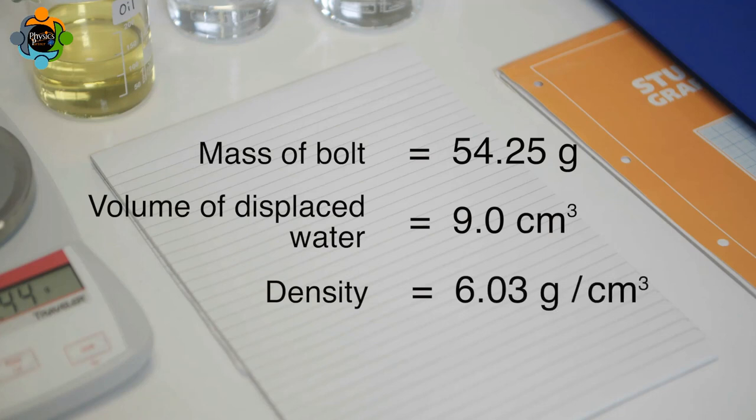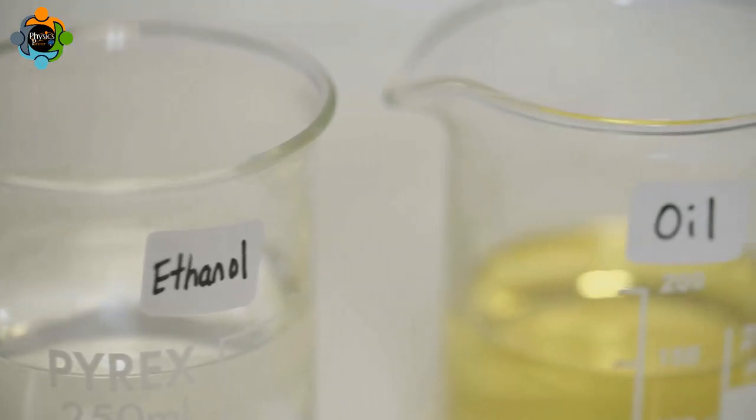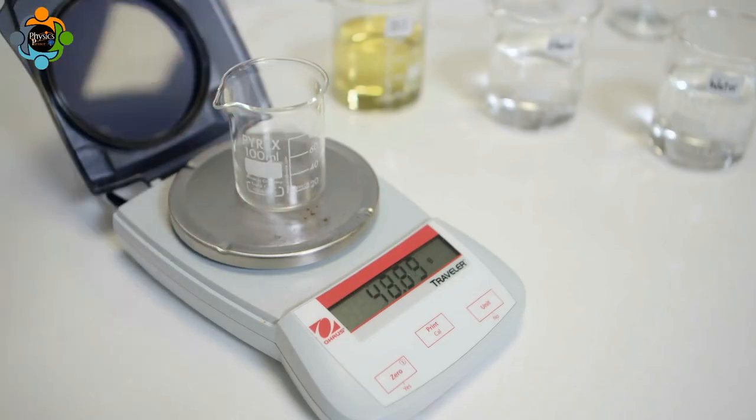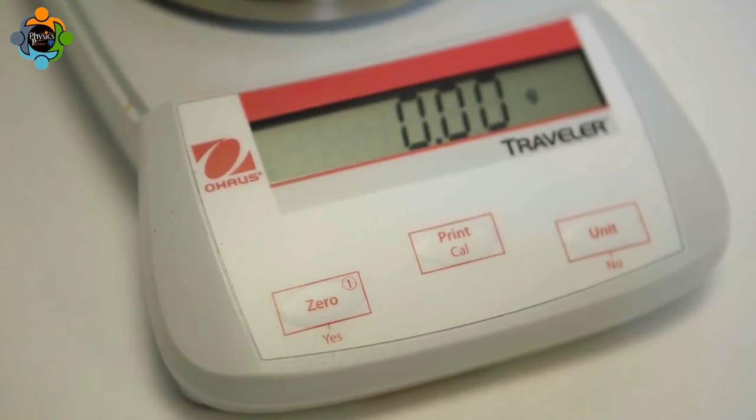To look at how to calculate the density of a liquid, cooking oil will be used as an example. An empty beaker is placed on a balance, which is set to zero by pressing the zero or tare button.